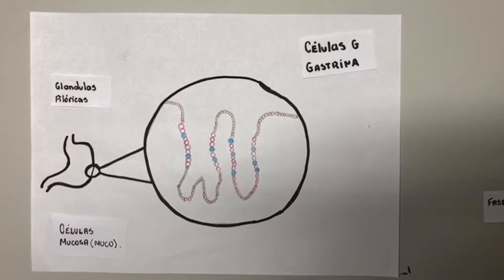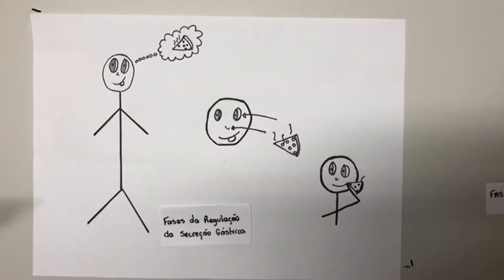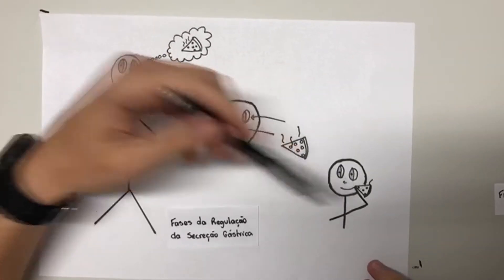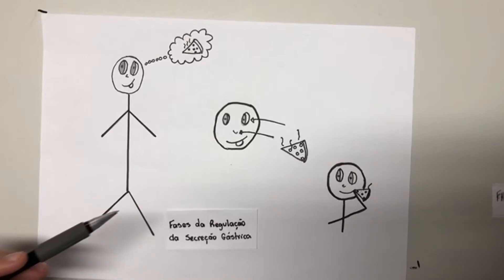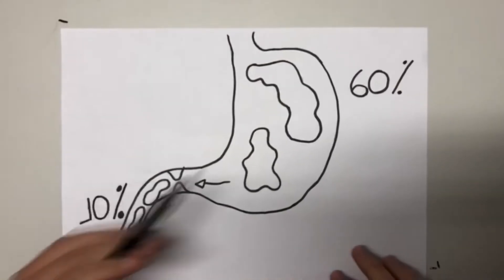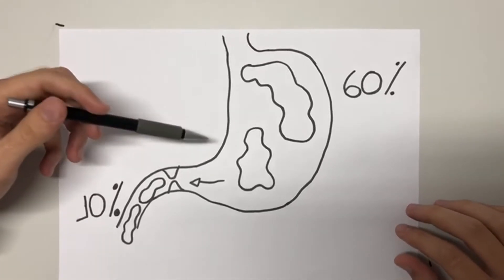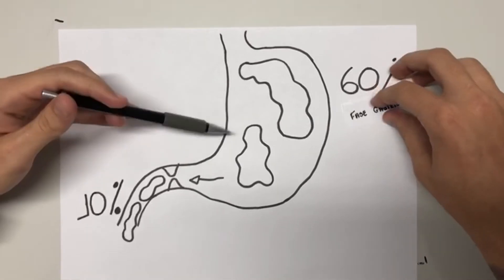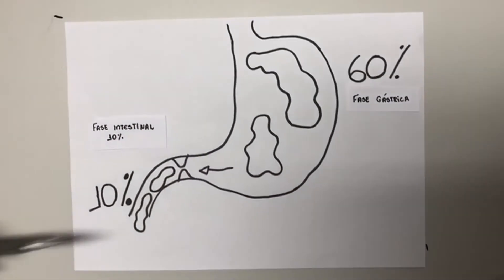A regulação da secreção gástrica ocorre em fases. Antes mesmo da presença do bolo alimentar no estômago, já começa a secreção gástrica por meio do pensamento, da visão e da presença do alimento na boca durante a mastigação: essa é a fase cefálica, responsável por 30% da secreção gástrica. Em seguida, a fase gástrica decorre da presença do bolo alimentar no estômago, sendo responsável por cerca de 60% da secreção. Por fim, a fase intestinal depende da presença do quimo no duodeno e é responsável por 10% da secreção gástrica.